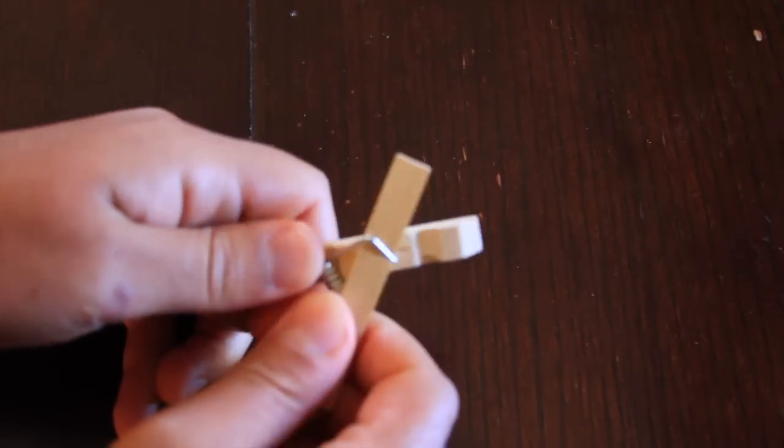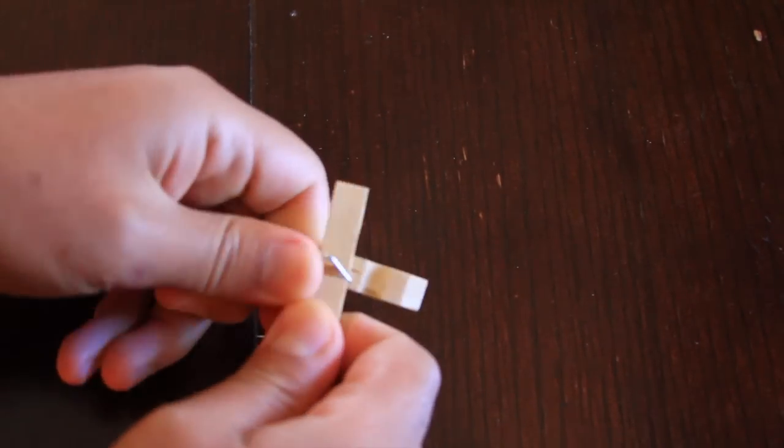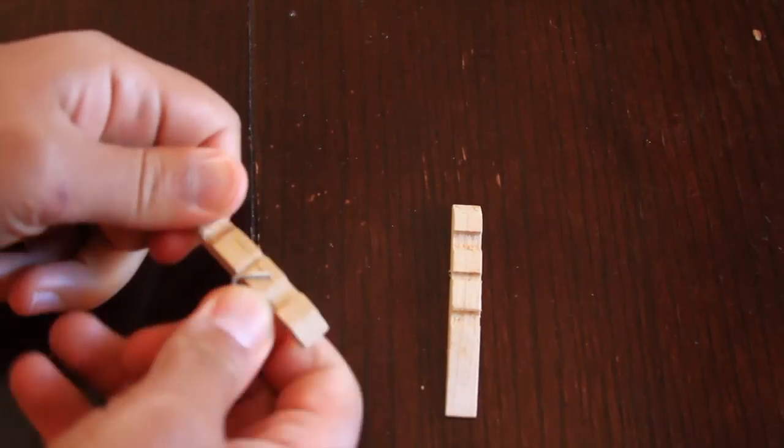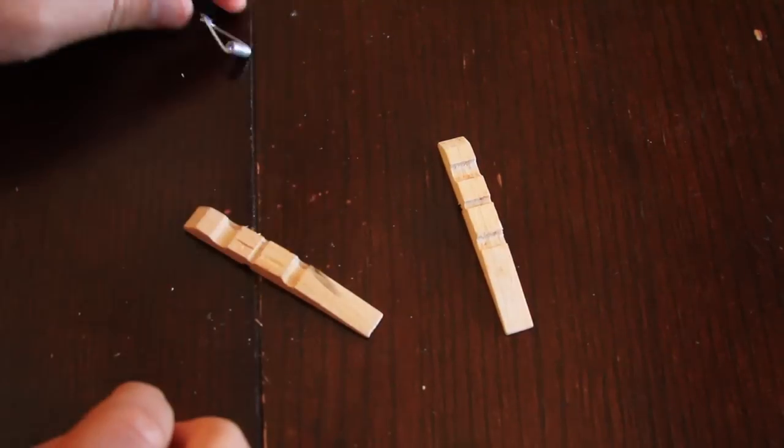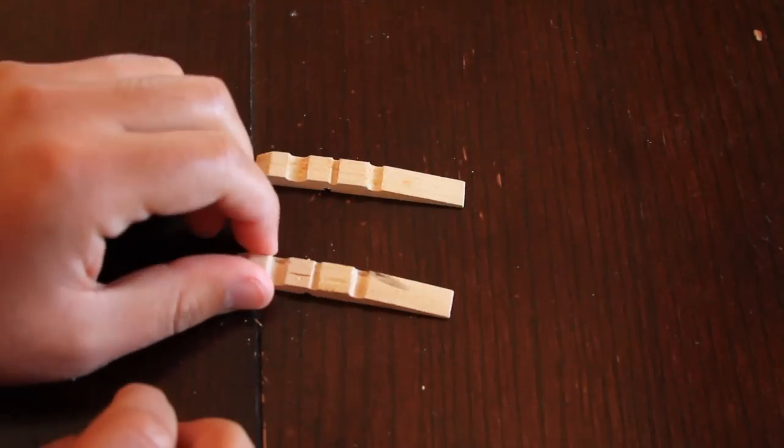Take the clothespin and remove the metal swivel. Just twist the wood until it comes off. You may have to pry it off, but keep the metal swivel as it will serve as the trigger. Now you'll have two pieces.